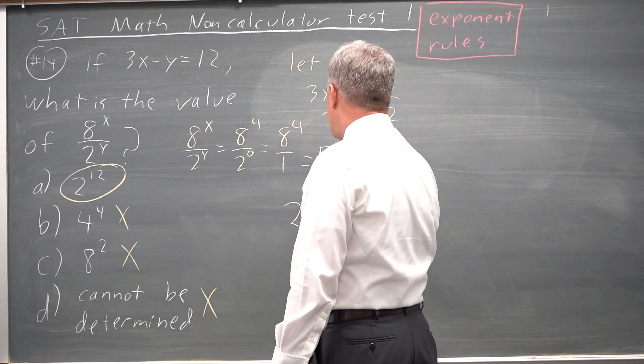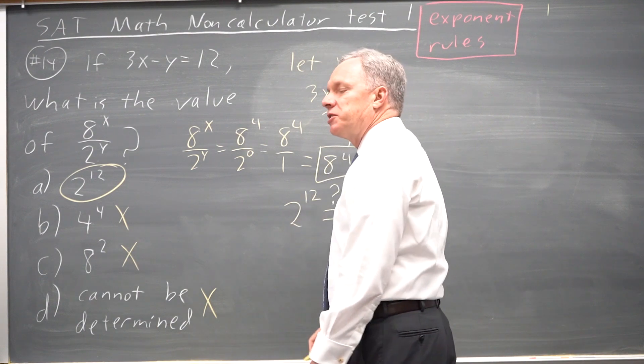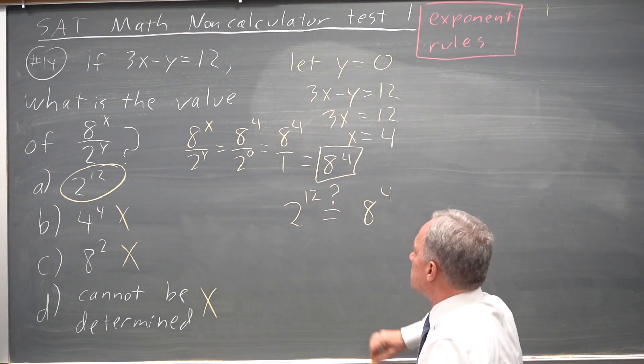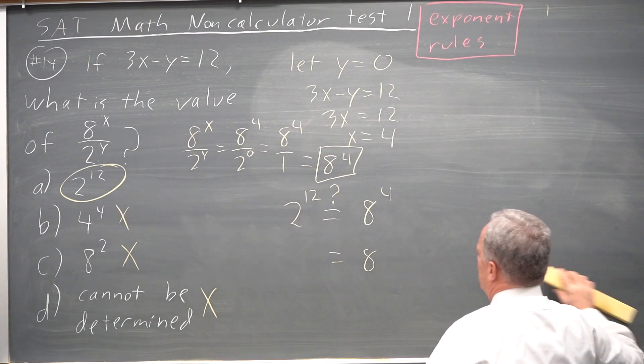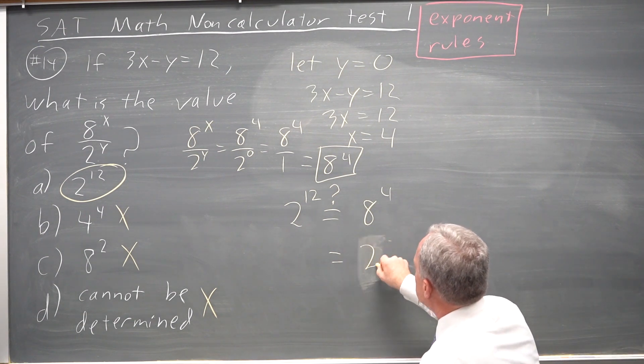2 to the 12 equals 8 to the 4. I'm going to put a question mark. My exponent rules, I know that 8 is 2 cubed, so that's 2 cubed to the 4th.